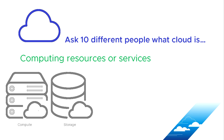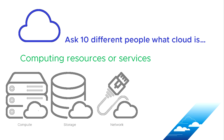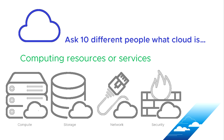The next thing we're going to need is some kind of storage. There are lots of different types of storage available, which we'll cover in subsequent videos. Storage is another commodity that can be bought from a cloud provider. We'll also need some kind of network to connect these together or to allow end users to access services, and then some kind of security and identity management to secure the resources we've procured. That covers computing resources and services.